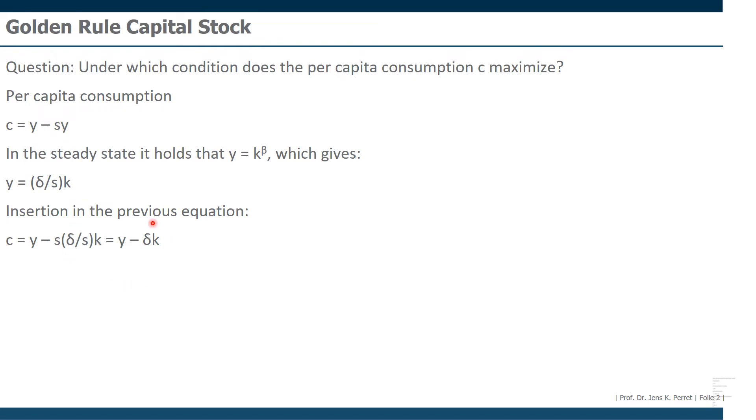Because if I have now this equation, what I'm going to do is calculate the first derivative of the per capita consumption for the capital stock. So if I do this, set it equal to zero,